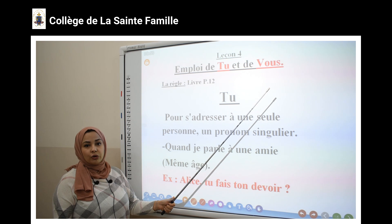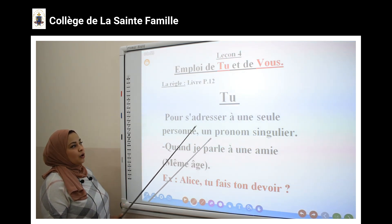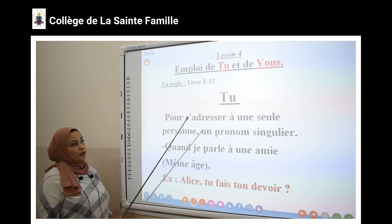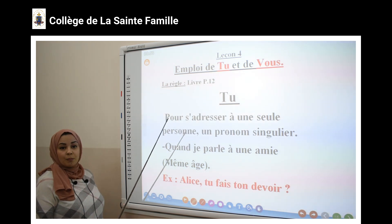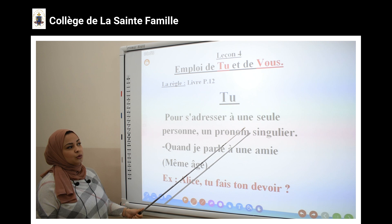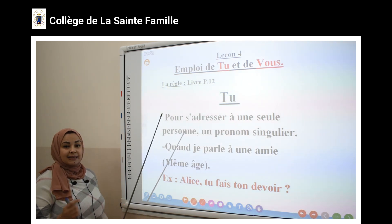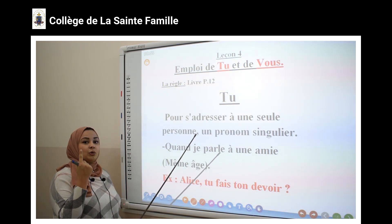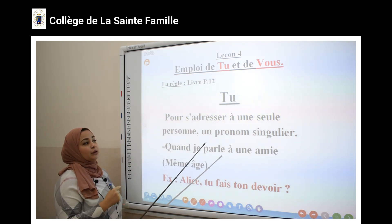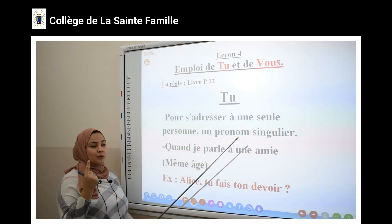J'utilise le pronom « vous ». Alors, on commence par le pronom « tu ». J'utilise le pronom « tu » pour s'adresser à une seule personne. C'est-à-dire, je parle avec une seule personne. Une seule personne. C'est un pronom singulier.